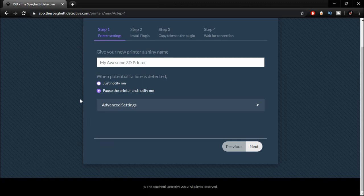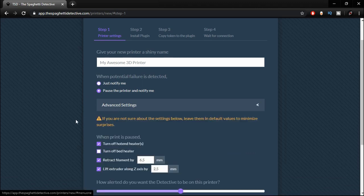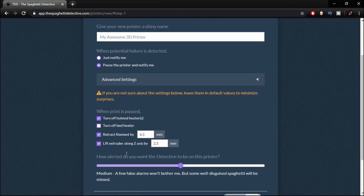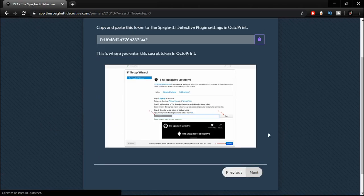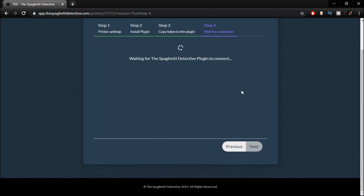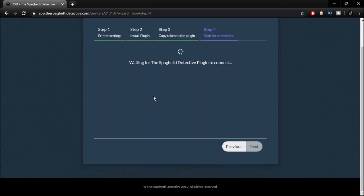The installation is easy. If you have already OctoPrint and camera setup, then it is just a matter of registering to the SpaghettiDetective.com and adding a new printer and following the wizard instructions. You can get this working in just a few minutes.